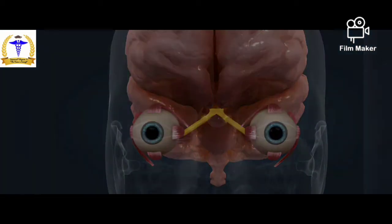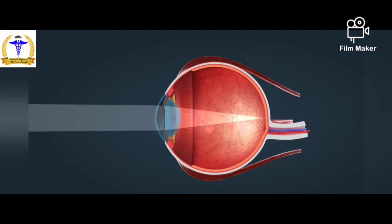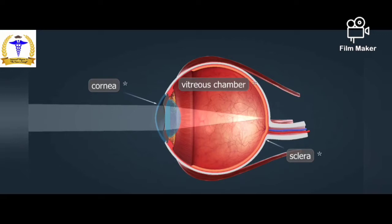The eyeballs are moved by the extraocular muscles, which are striated muscles under voluntary control. The vitreous chamber forms the main mass of the eye. The cross section of the eye shows three main layers. The outermost is the sclera, a very durable layer of connective tissue, which continues in the transparent cornea.